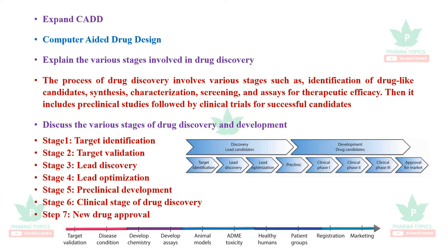Stages of Drug Discovery include identification of drug-like candidates, synthesis, characterization, assay and screening, in vivo models like animals and cell assays, and clinical trials. These are all the stages.